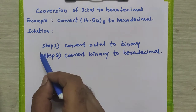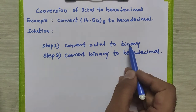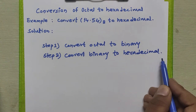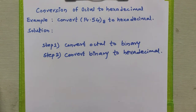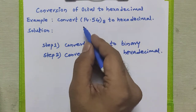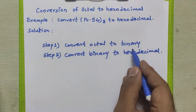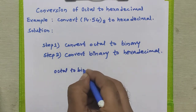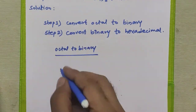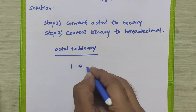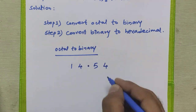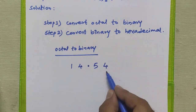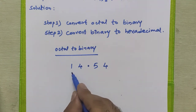We already studied how to convert any octal number to binary in our previous videos, as well as how to convert any binary number to hexadecimal number system. Now we will first convert the given octal number 14.54 to binary. To convert any octal number to binary, for each octal digit we have to write the 3-bit binary equivalent of it.